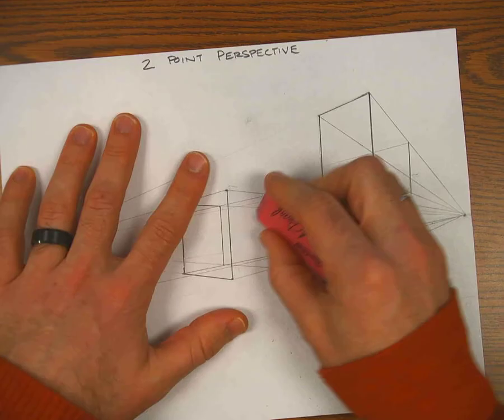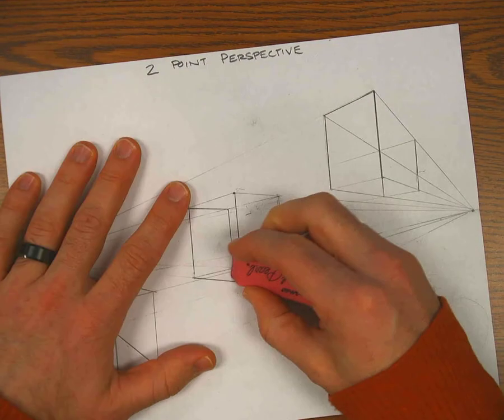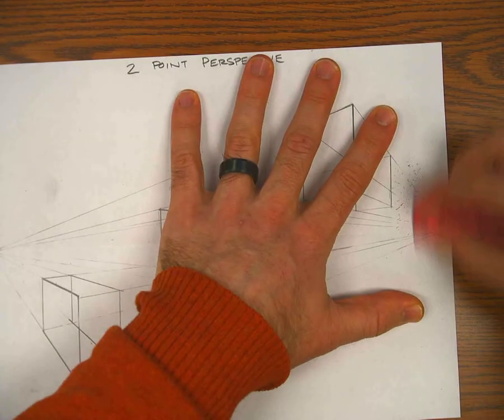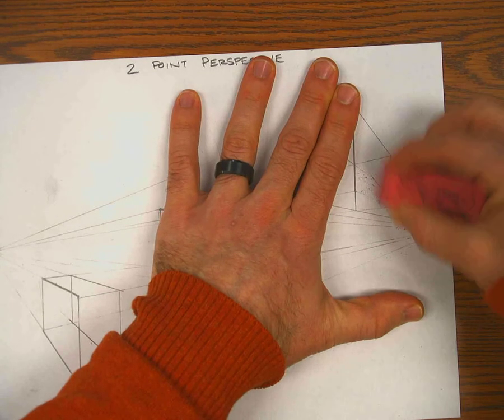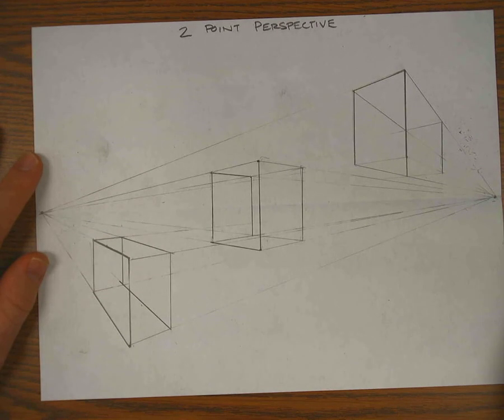If you want to leave all these lines, that's fine, but by erasing them, it gives you a clearer view of each cube. And we have our three cubes in two-point perspective.